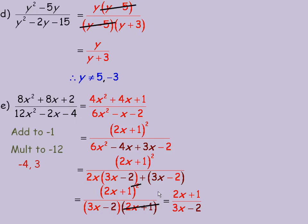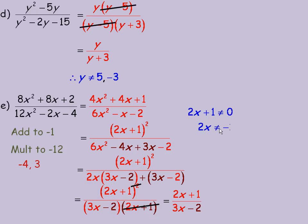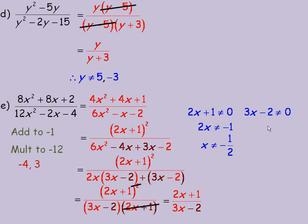Now the restrictions — we look at any factors that were ever in the denominator, and there are two of them: 3x minus 2 and 2x plus 1. First, 2x plus 1 is not allowed to equal 0. Rearranging: subtracting 1 from both sides gives 2x cannot equal negative 1, then dividing by 2 gives x cannot equal negative one half. From the 3x minus 2 factor: 3x minus 2 is not allowed to equal 0, so adding 2 gives 3x cannot equal 2, and dividing by 3 gives x cannot equal 2 thirds. So those are the two restrictions — two different binomial factors were in the denominator, so there are two different restrictions. And that's the end of the lesson.